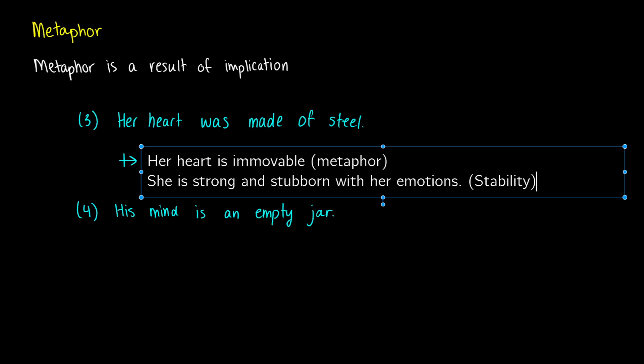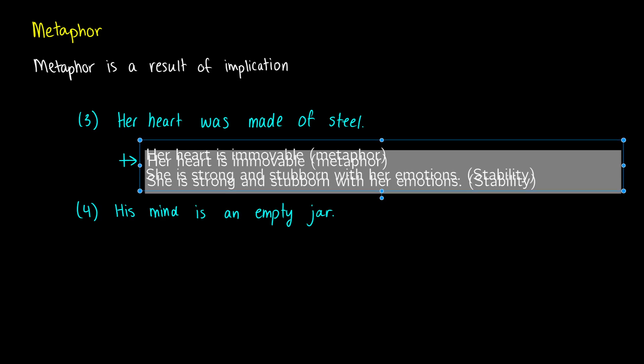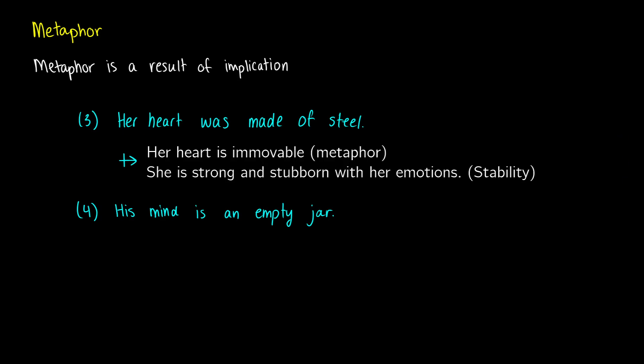Sometimes it's hard to give an exact definition of what we mean by a metaphor because it's something that we still understand. But this is another example of an implicature. You hear her heart was made of steel, and there's an expectation of what that means.